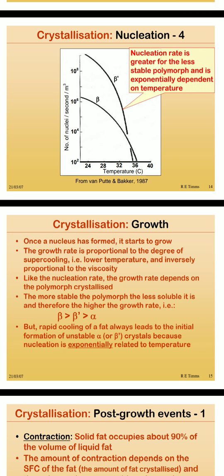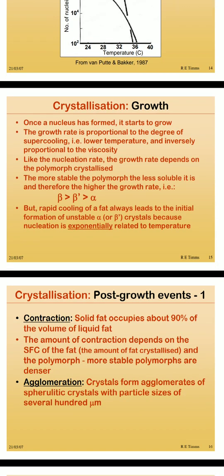Rapid cooling of a fat always leads to initial formation of unstable alpha or beta-prime crystals because nucleation is exponentially related to temperature — as temperature increases slightly, nucleation increases very rapidly. Solid fat occupies about 90 percent of the volume of liquid fat. The amount of contraction depends on the solubility of the fat and the super cooling factor, which is the specific fat concentration.